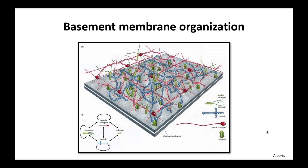I just wanted to show this cartoon of the basement membrane blown up a bit. Just as small leucine-rich proteoglycans are important in collagen organization, proteoglycans are very important in basement membrane organization. Perlecan is a proteoglycan that is a very important component of the organization of this lattice, which includes collagen 4 shown in red and laminin — this heterotrimer shown in blue. You get a sense of how organized and complex this basement membrane is.